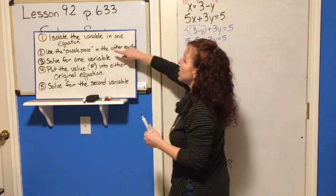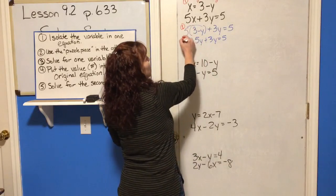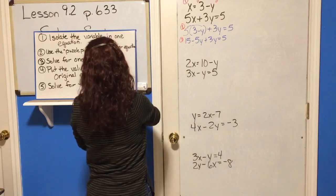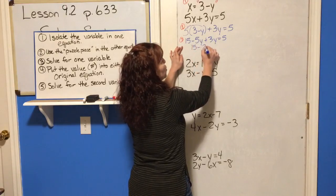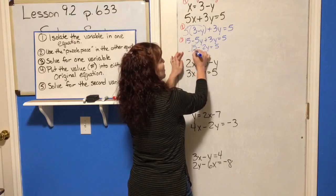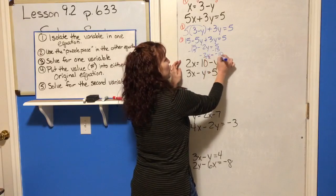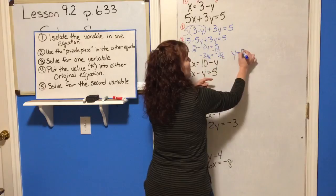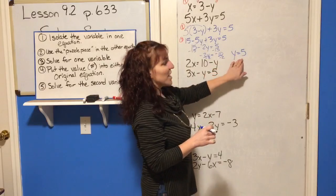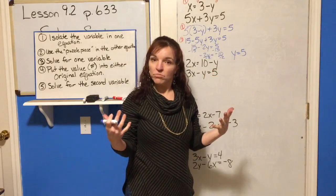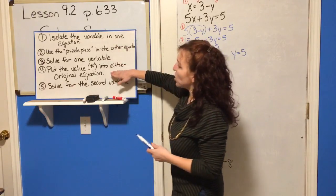That's step three — solving for one of the variables. Combining like terms: negative 5y plus 3y gives 15 minus 2y equals 5. Subtract 15: negative 2y equals negative 10. Divide by negative 2: y equals 5. A negative divided by a negative is positive, so y is 5.